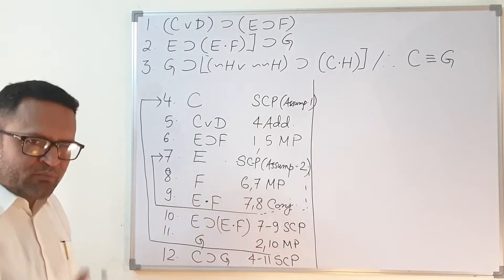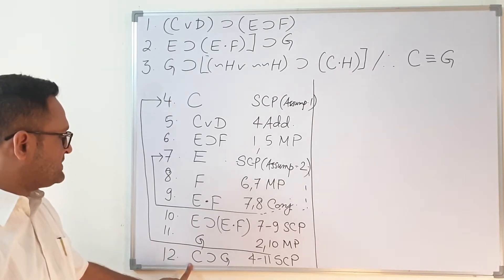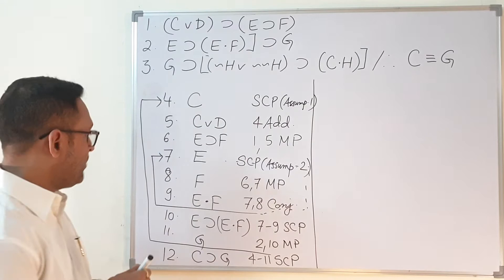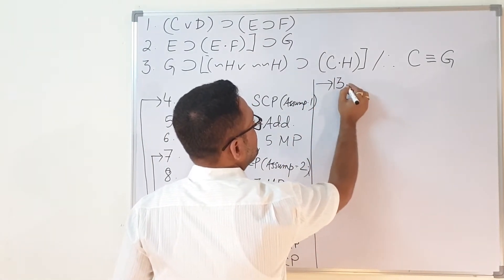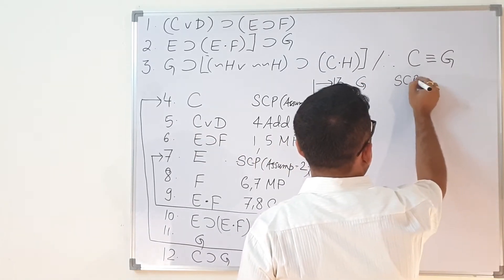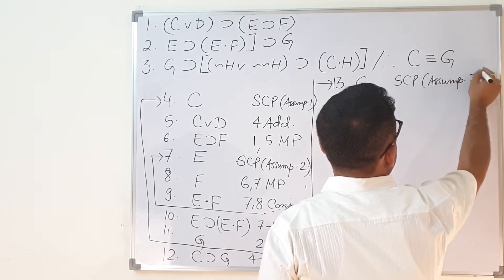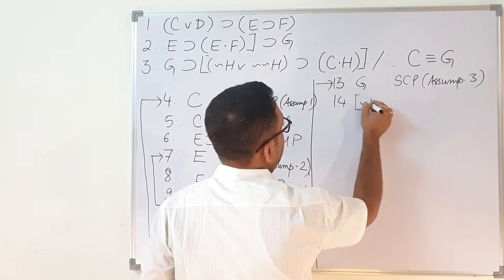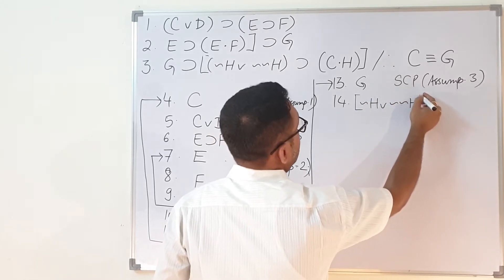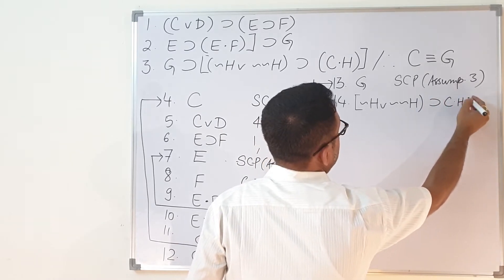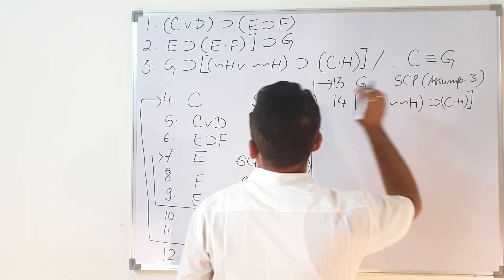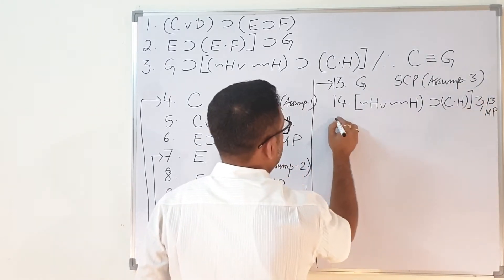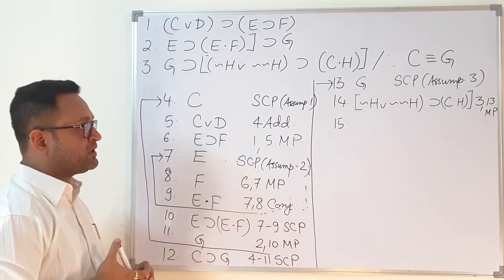The second part requires a little more working. We need to create C from G, so our assumption should be G. On line number 13, I take G as SCP assumption 3. On line number 14, with G I will get negation of H ∨ double negation H implies C·H. This is from lines 3 and 13 by modus ponens. Now the problem starts from here — students find it difficult to see how to reach the next required line.